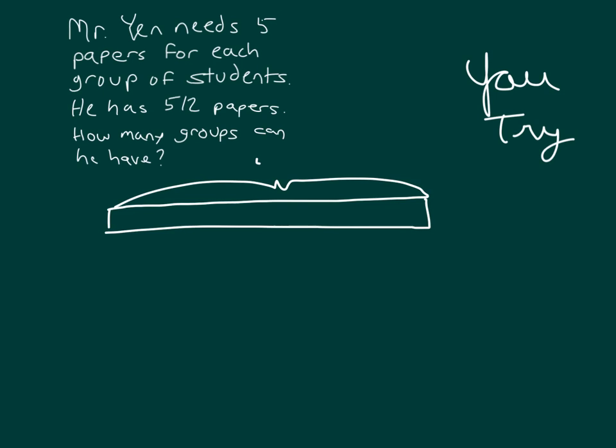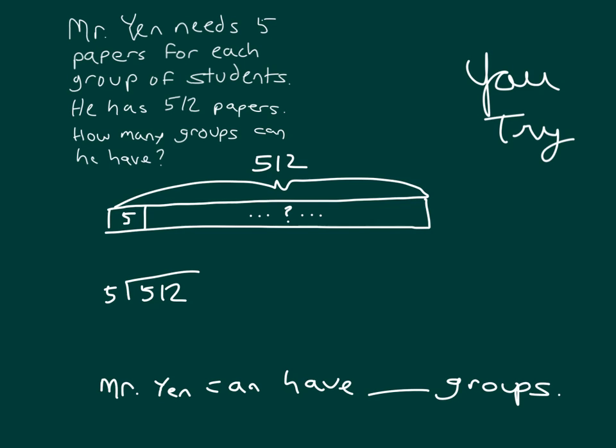The whole is labeled 512 for those papers. We don't know the number of groups this time. However, we do know that each of the groups needs 5 of those papers. So that's why we are labeling our tape diagram as follows. In doing our work, we have 512, we're dividing it by 5. And of course, we expressed our answer clearly. Mr. Yen can have blank groups.